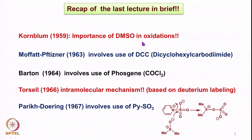We discussed in the Kornblum oxidation the activation of halides or tosylates with DMSO, eventually leading to the oxidation and forming carbonyl compounds. We also discussed the mechanism.